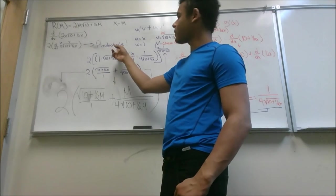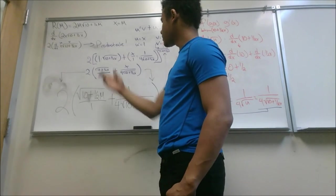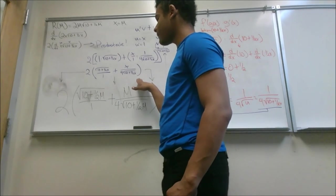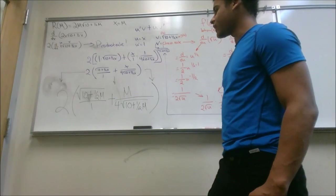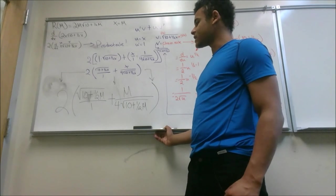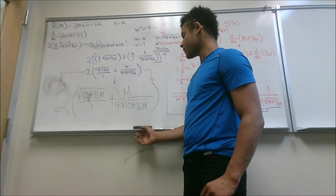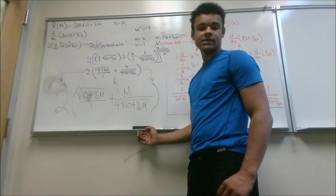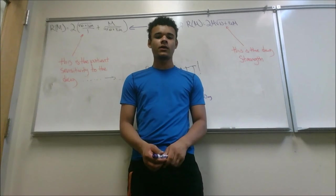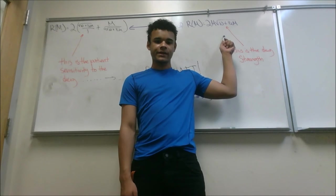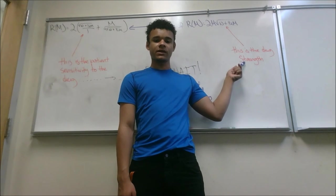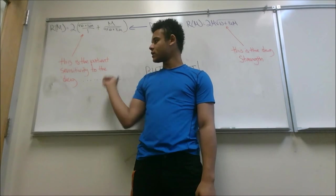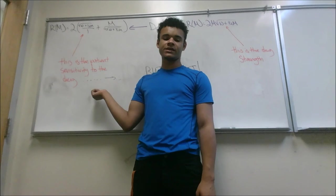Now, we can continue on with the product rule again. These are the steps that we took. Multiply everything out and you'll end up with a final answer of 2 times the square root of 10 plus 1 half M, plus M over 4 times the square root of 10 plus 1 half M. So we were given this equation, which is the strength of the drug, and we were told to find the derivative of that equation, which is the patient sensitivity to the drug.